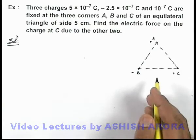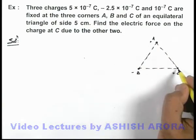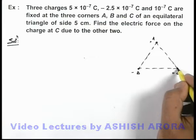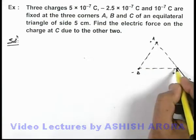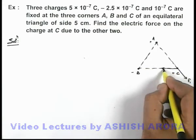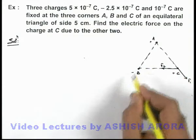Now in this situation, due to A, C will experience a repulsive force in the direction away from it, say it is F₁. And due to B, it will experience an attractive force F₂ toward the point B.